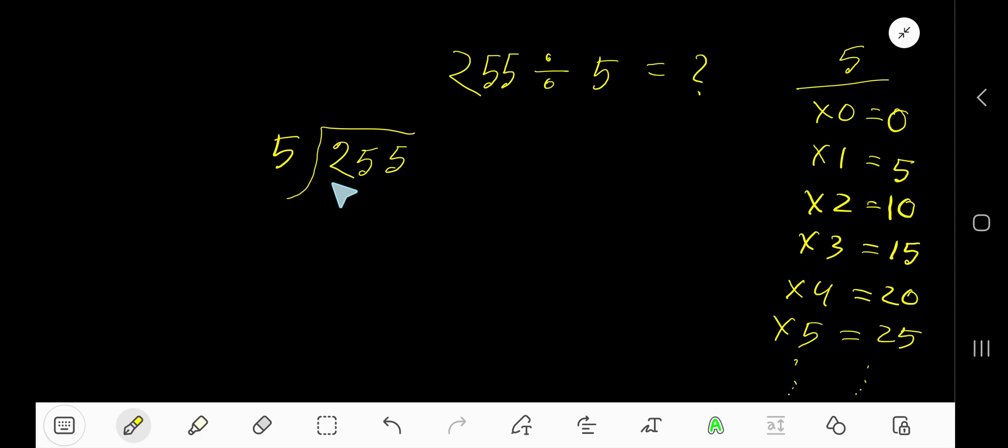5 goes into 2 how many times? 0 times, as 2 is less than 5. So 0 times 5 is 0. Subtract 0, you are getting 2. Bring down this 5.